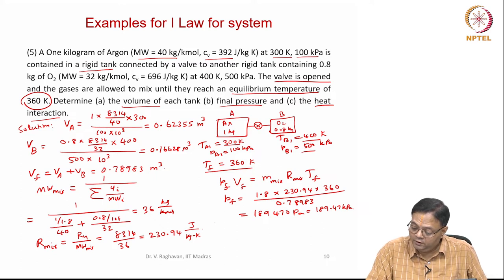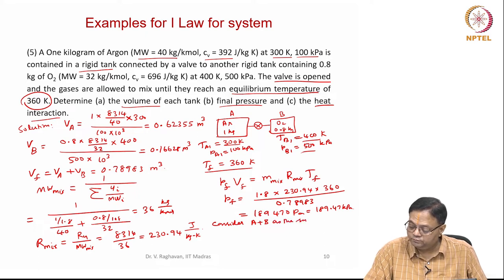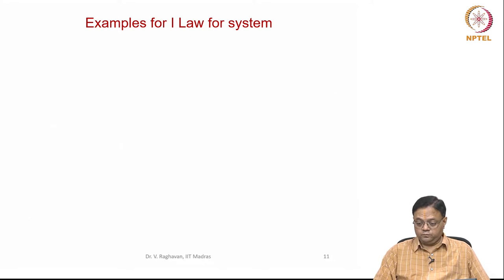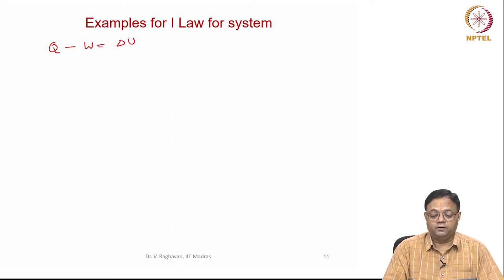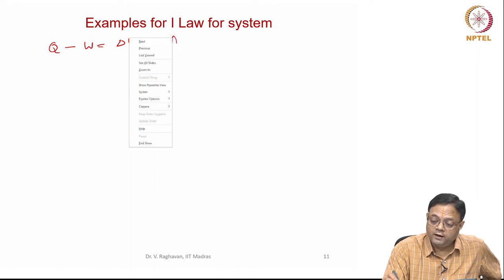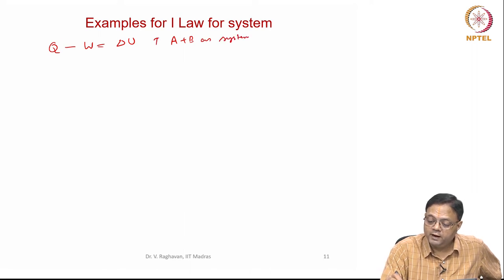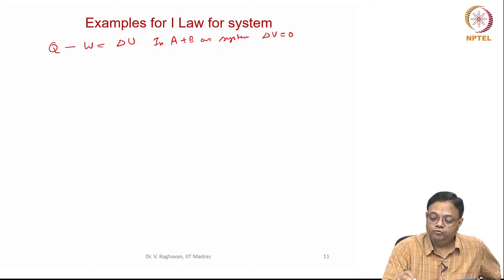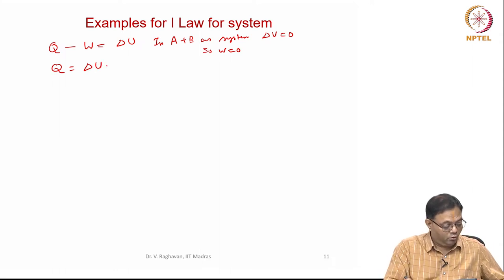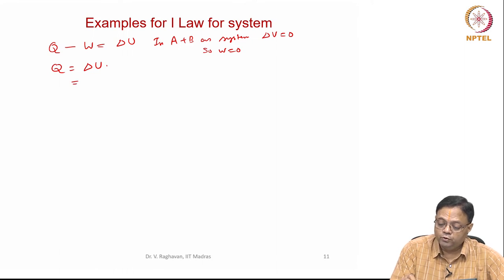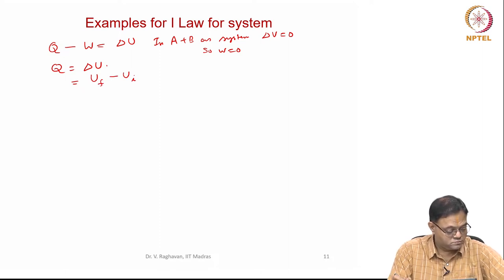Now consider A plus B as the system. Since both tanks are rigid, delta V equals zero, so W equals zero. Therefore, from the first law, Q equals delta U.